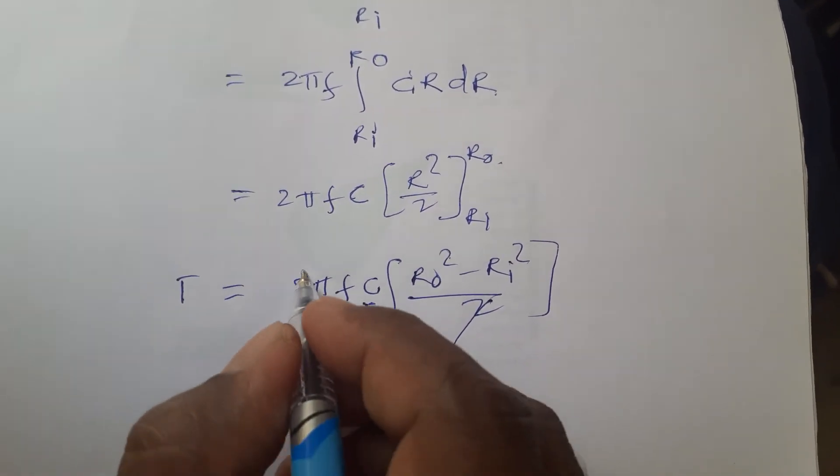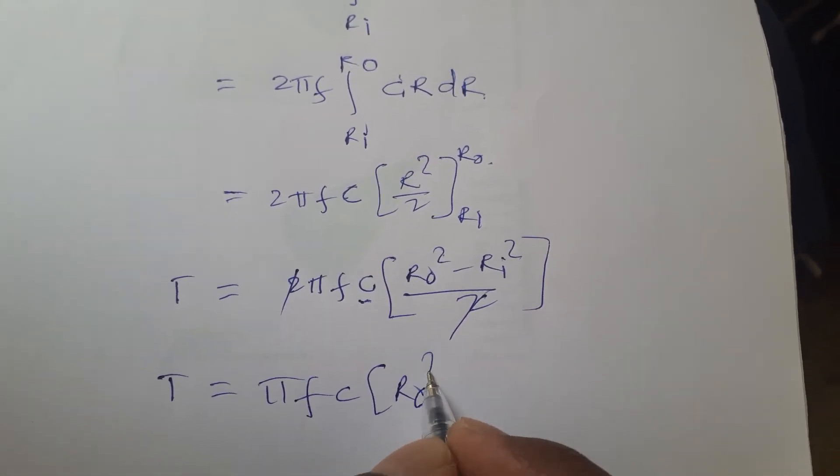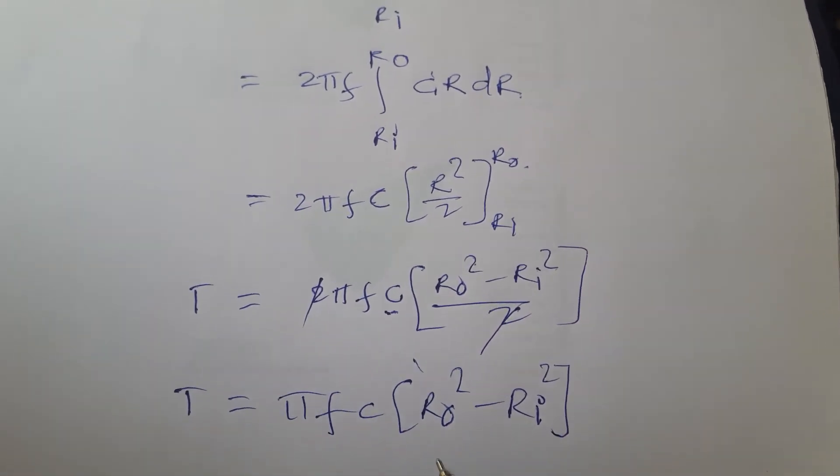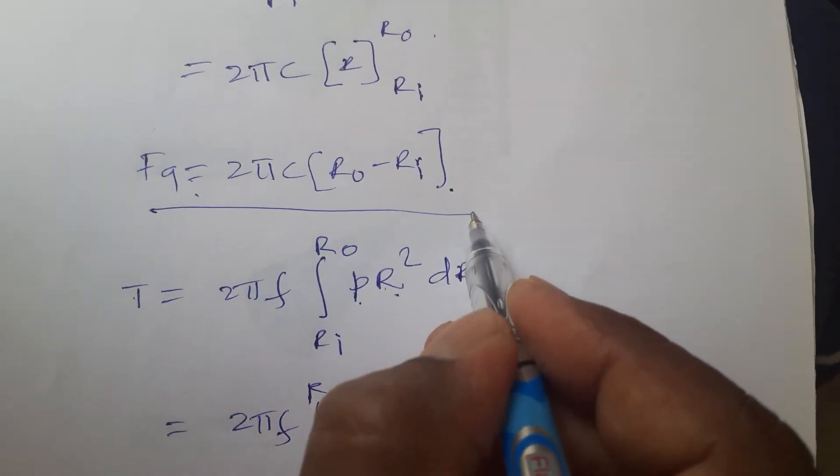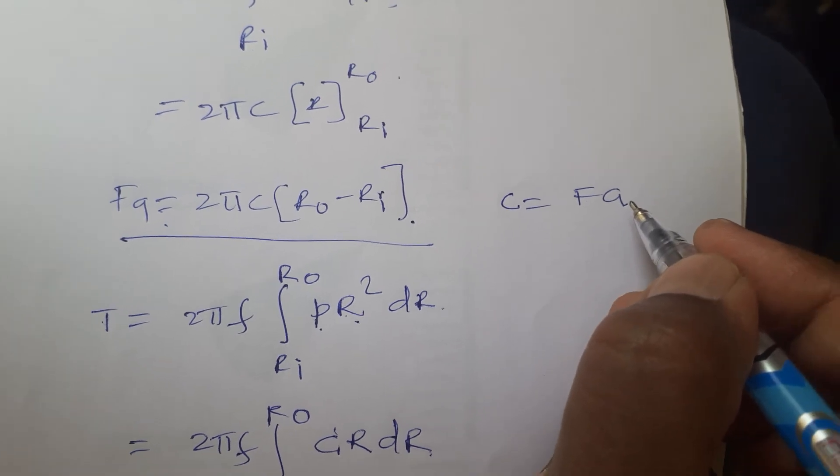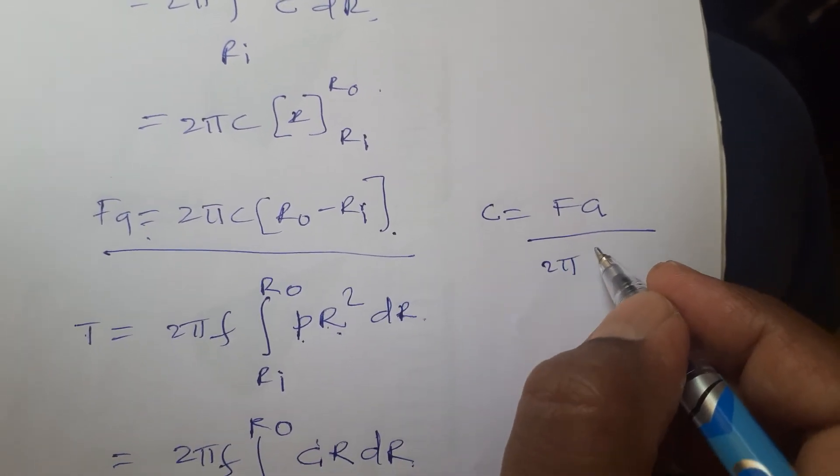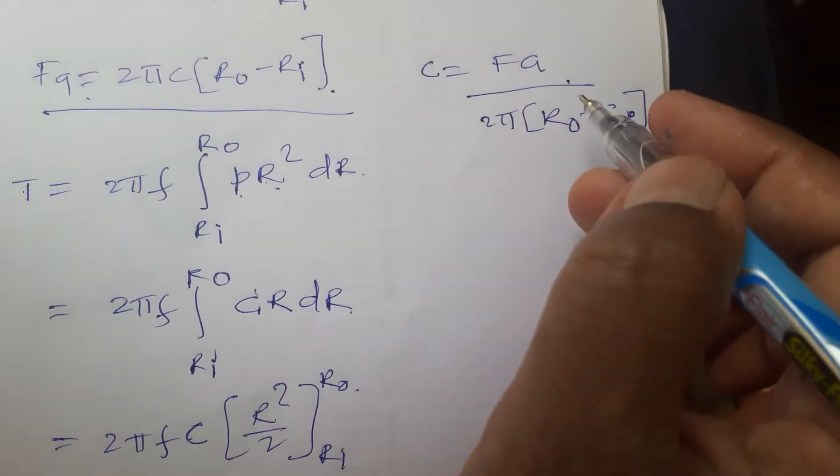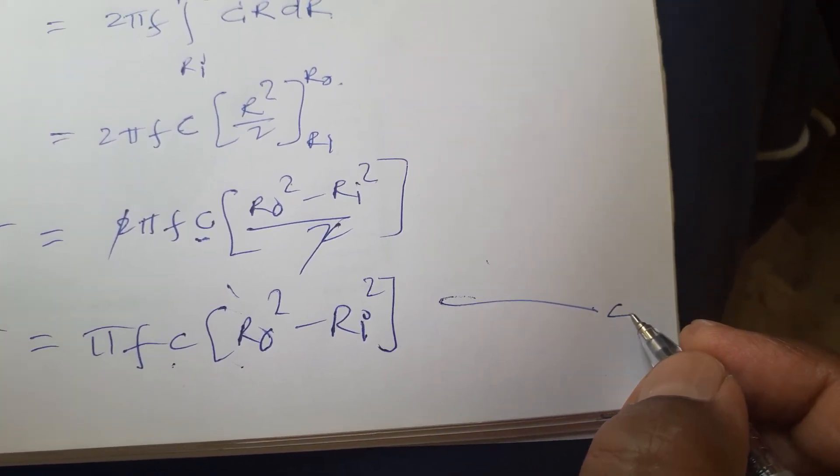You can cut this. So T is equals to pi F, C, R out square minus Ri square. Where C is equals to, from this equation, what is the C? C is equals to FA divided by 2 pi will come down. 2 pi R out minus Ri. Substitute this value in this equation. I can say this one as equation C.